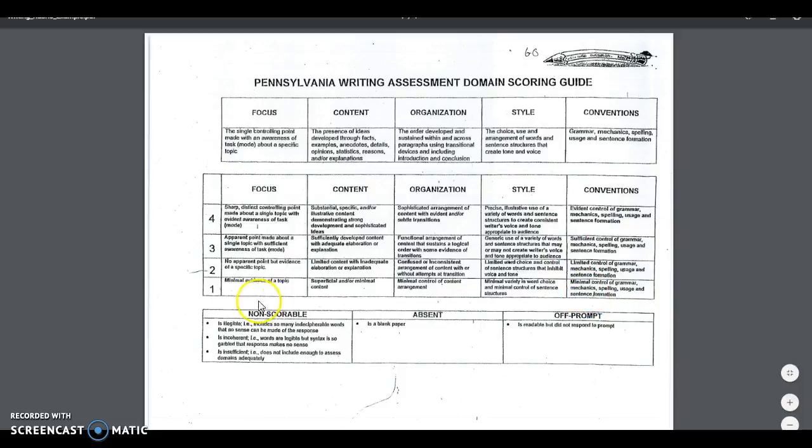So, and the way this format is set up, we have one at the bottom. And we see that this is increasing as we go up. So let's look at conventions here. So the one score has minimal control of grammar, mechanics, spelling, usage, and sentence formation. Two has limited control. Three has sufficient control. And four has evident control of grammar, mechanics, spelling, usage, and sentence formation. Now, how does that sound to you? Now, this is a good start. But I think we have to be a little bit careful here, because what is limited to me might be minimal to you and sufficient to someone else. So sometimes we have to be careful of evaluative terms here. We see a similar thing with style, with minimal variety, limited word choice, generic use of a variety of words. I think that this is a little bit better than this one.